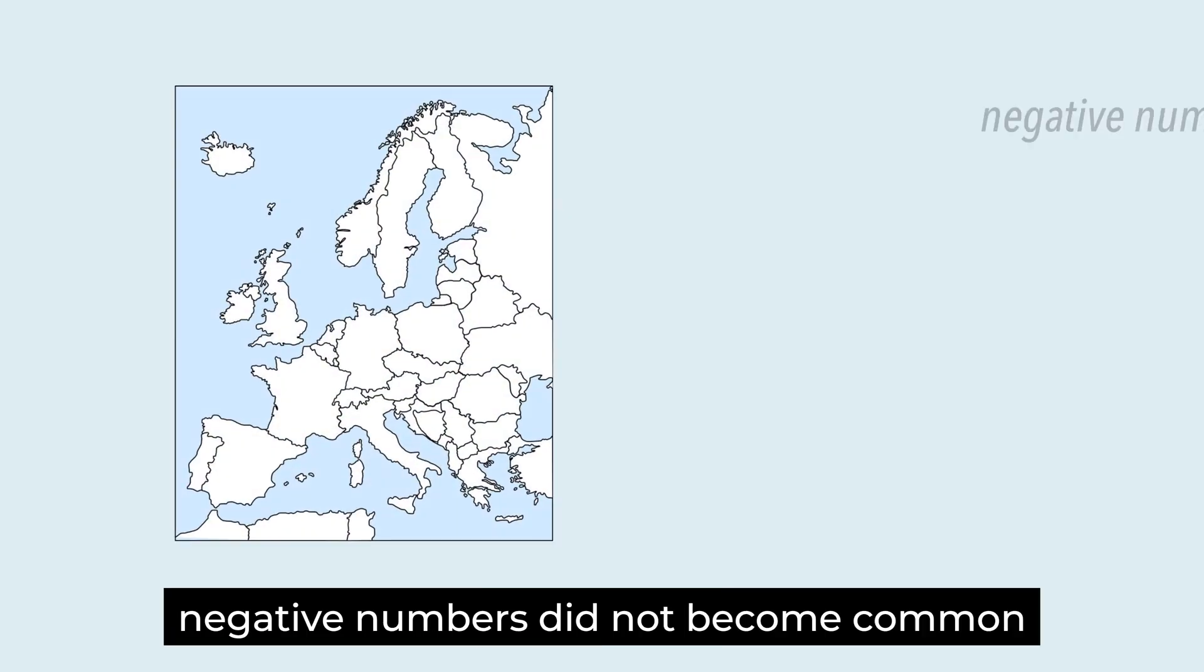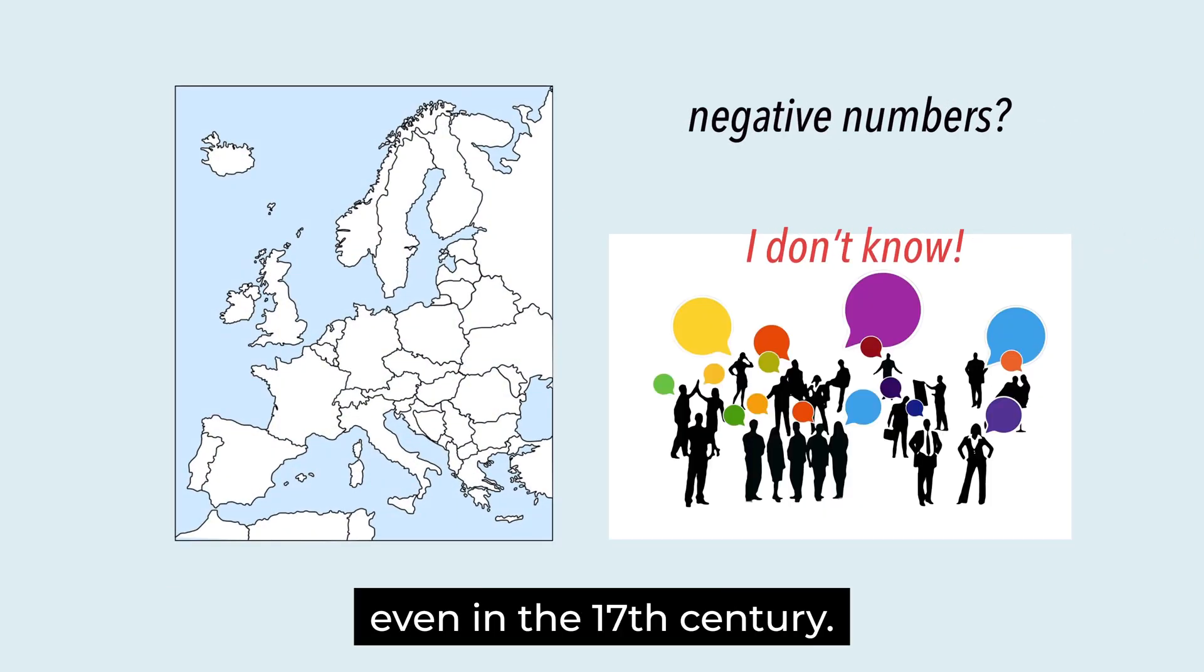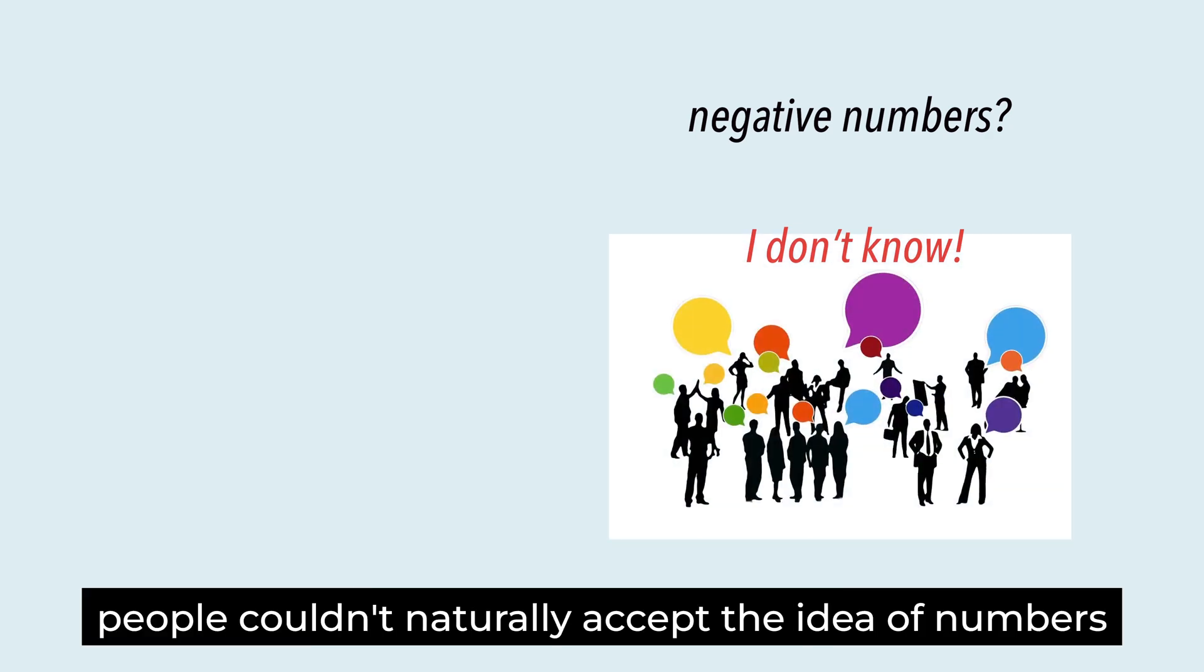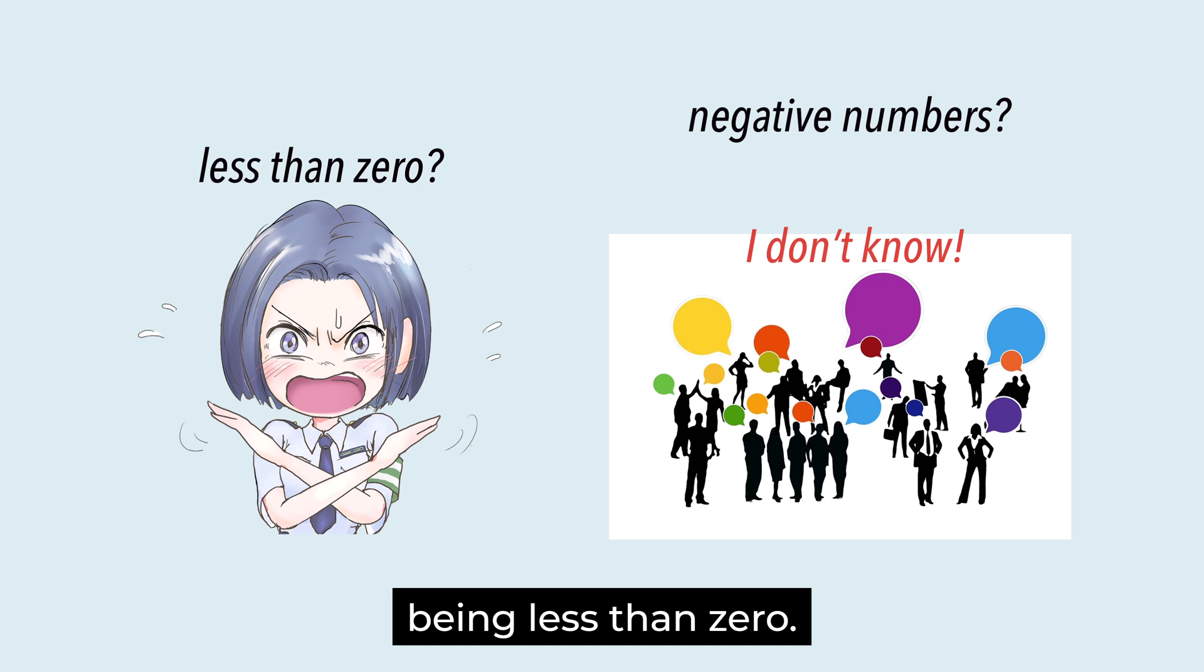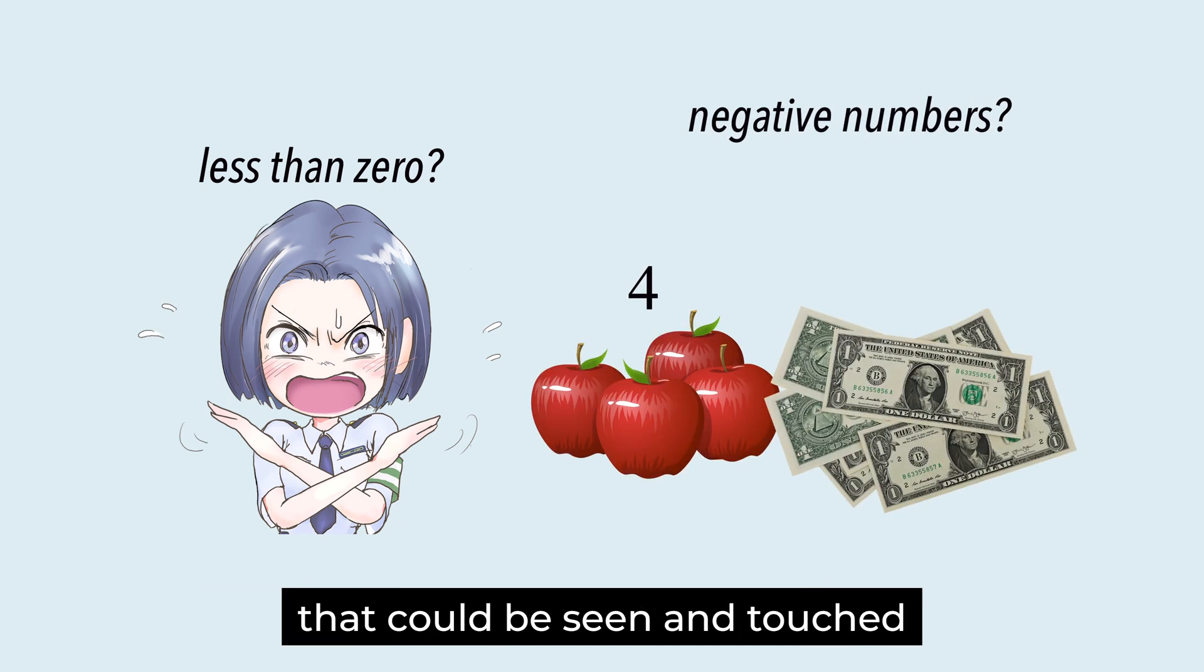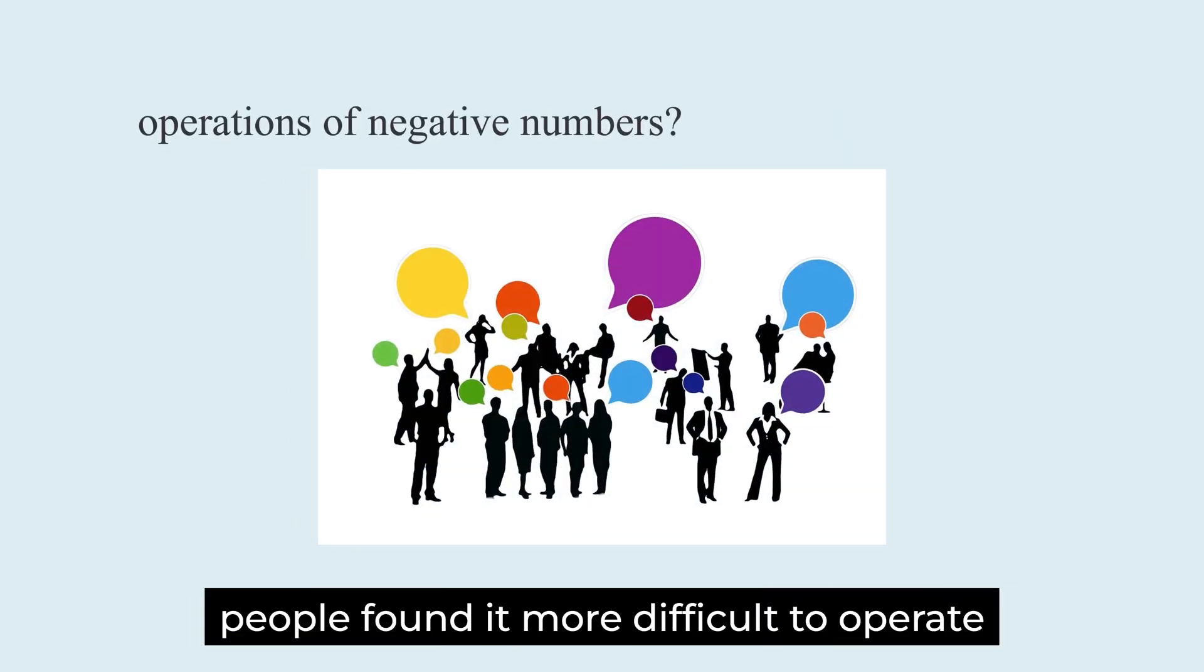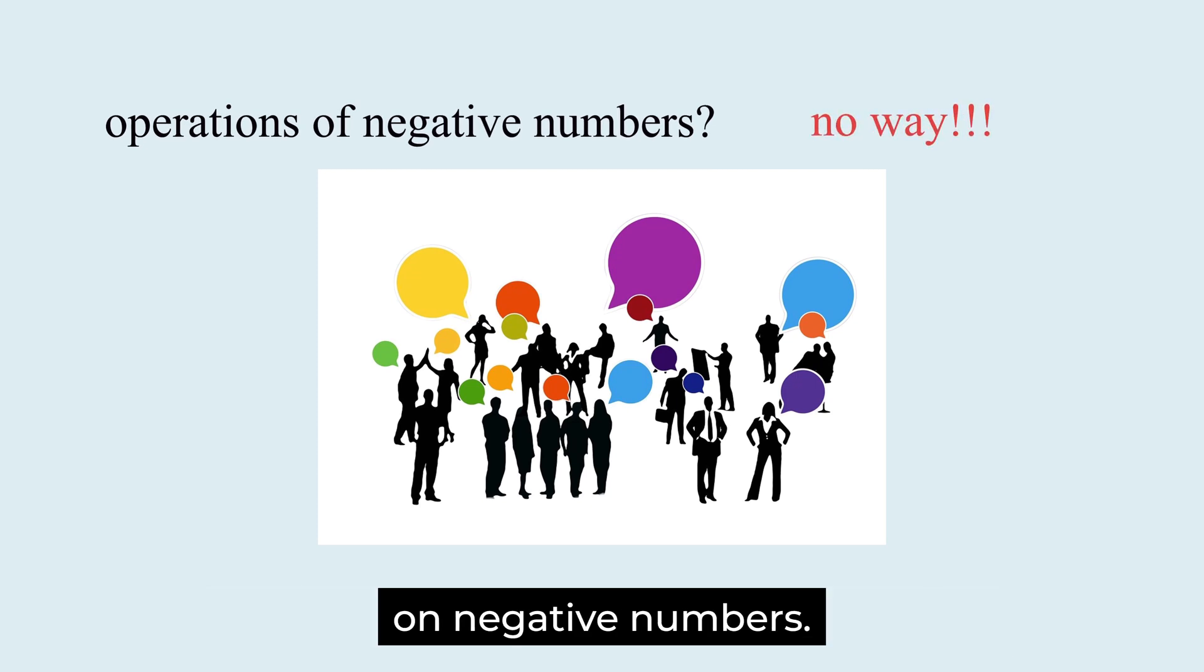In the West, negative numbers did not become common even in the 17th century. People couldn't naturally accept the idea of numbers being less than zero. Negative numbers were not the numbers that could be seen and touched like positive numbers. Because of this, people found it more difficult to operate on negative numbers.